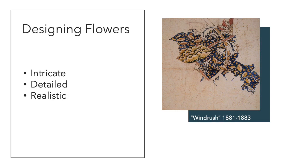As I mentioned before, he used lots of nature and flowers around him and was really inspired by this. These designs were really intricate and detailed but also incredibly realistic. As you can see in this design here, which is called Windrush and was created in 1881 to 1883, you can see how detailed the flower is. He hasn't just drawn a circle with petals around the outside — he actually looked in detail at the flower, at the flower's colours, how it moves, and you can really see that in the detail here.